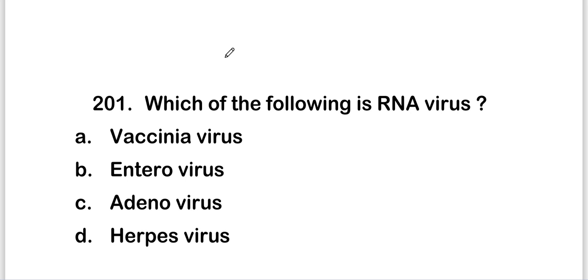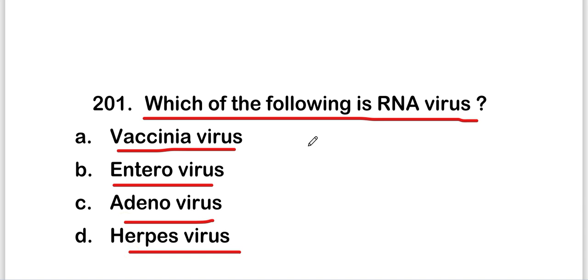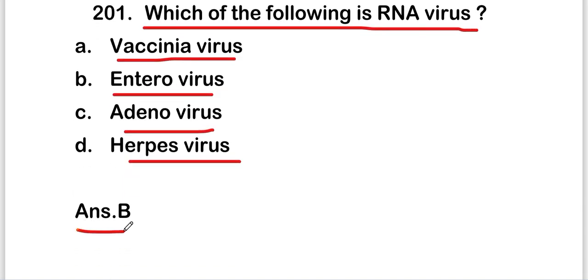Welcome to a new video on MCQs on virology or viruses, and this is Part 11 of this series. The first question is: which of the following is an RNA virus? Options are vaccinia virus, enterovirus, adenovirus, or herpes virus. The right answer is option B, that is enterovirus. Enterovirus is an RNA virus.